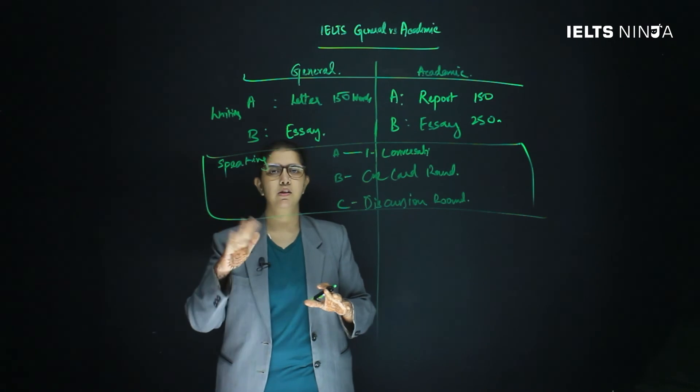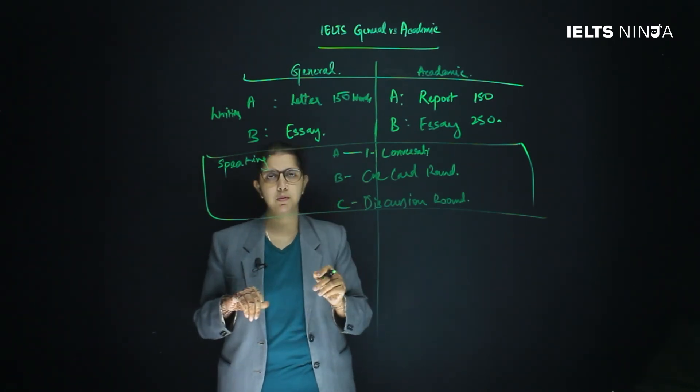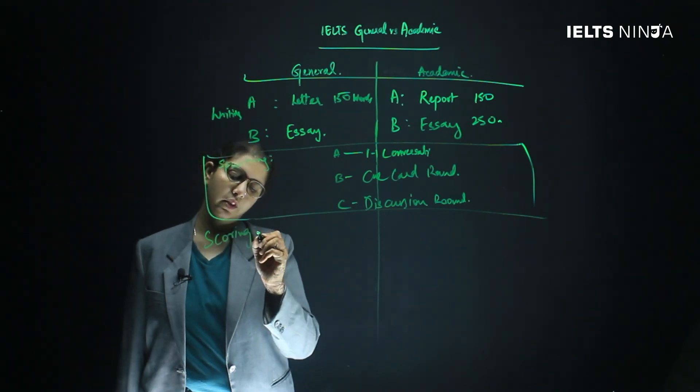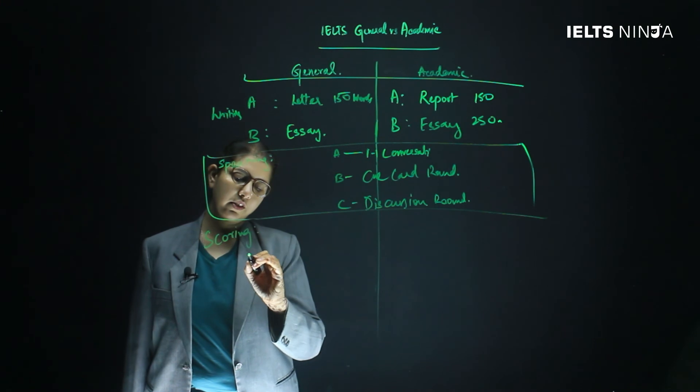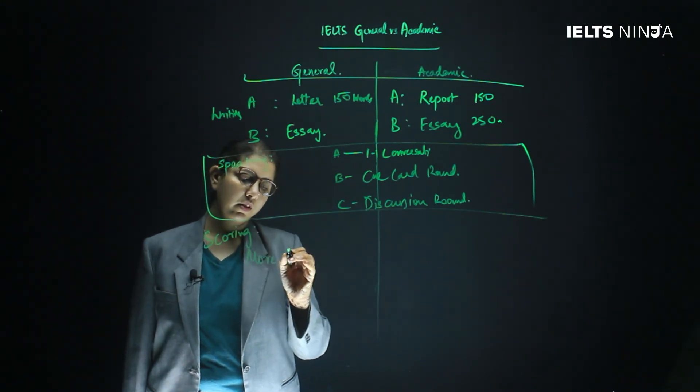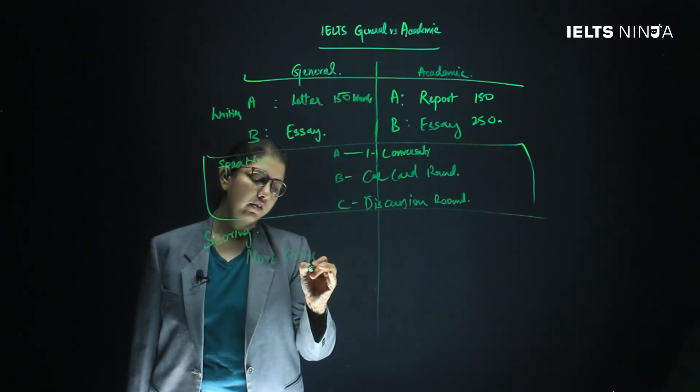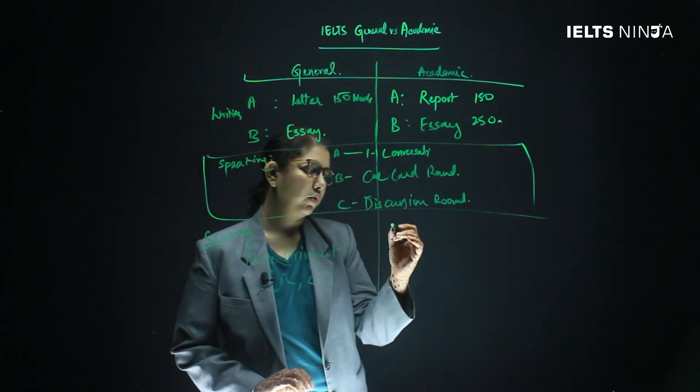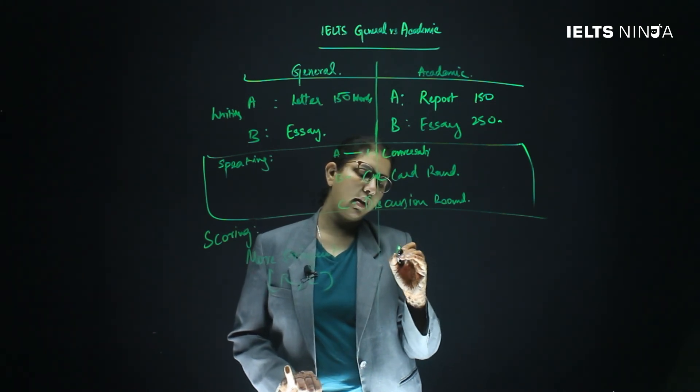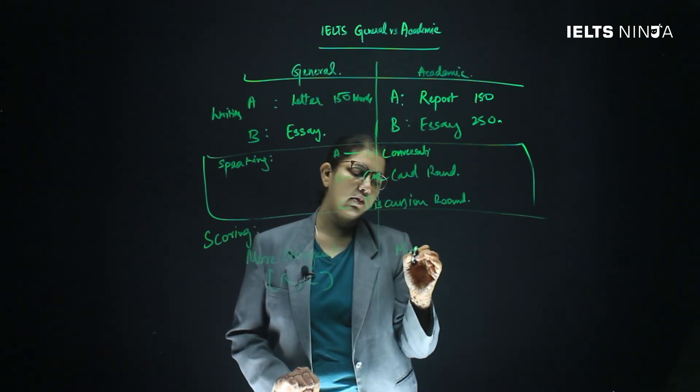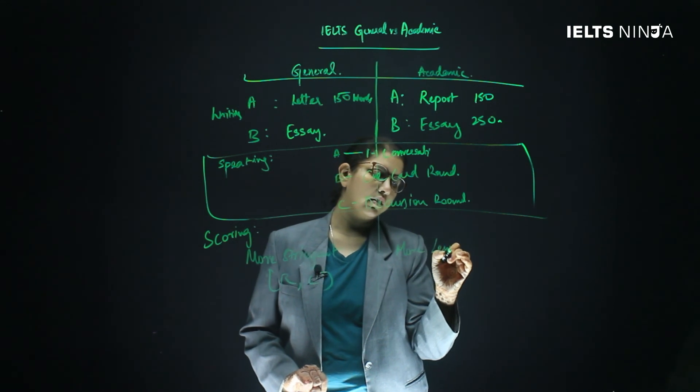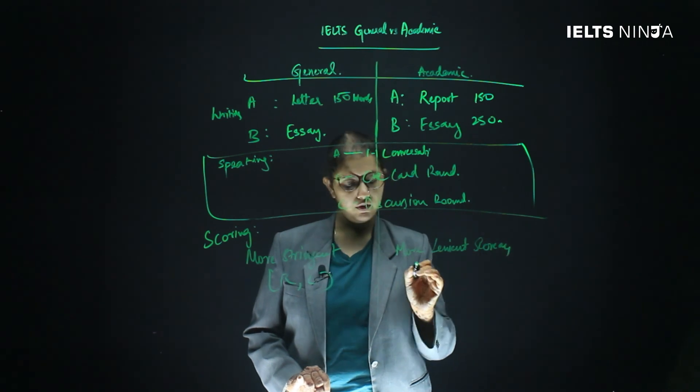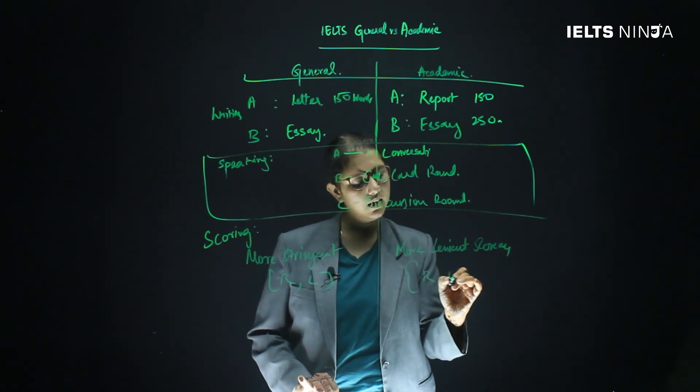I have explained to you the difference between general and academic. So also one more difference. When it comes to scoring, the general section has more stringent norms for the reading and listening section, whereas the academic has a more lenient scorecard for the reading and listening section.